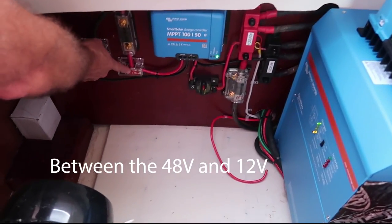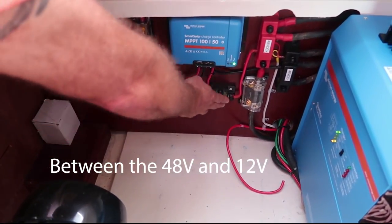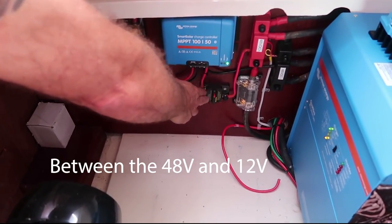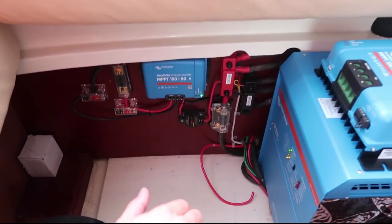These are our distribution blocks, and then of course our fuses for that, and our quick disconnect. So that's about it in a nutshell.